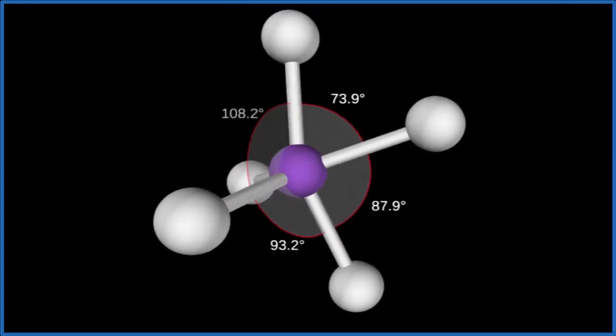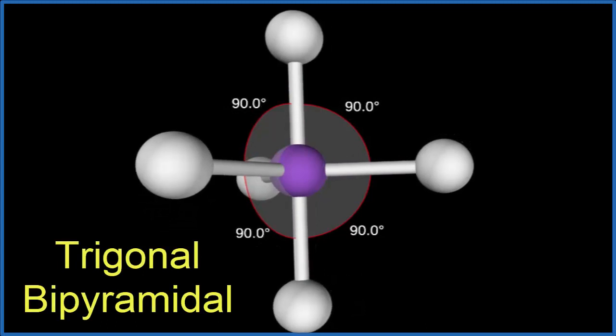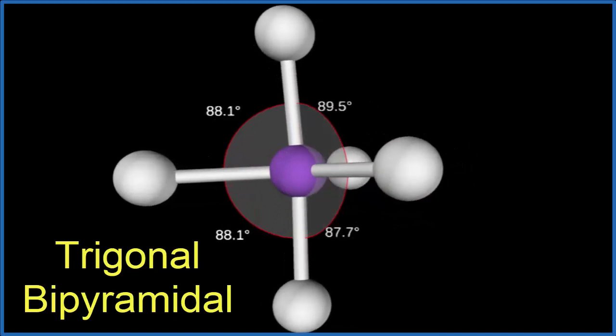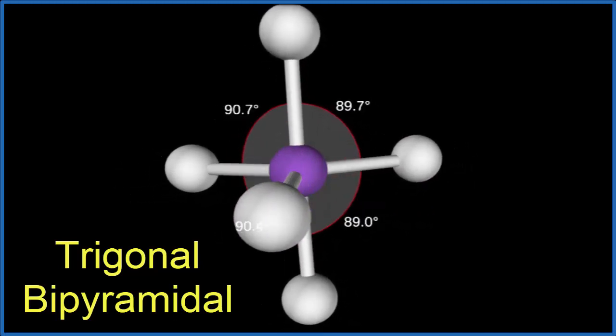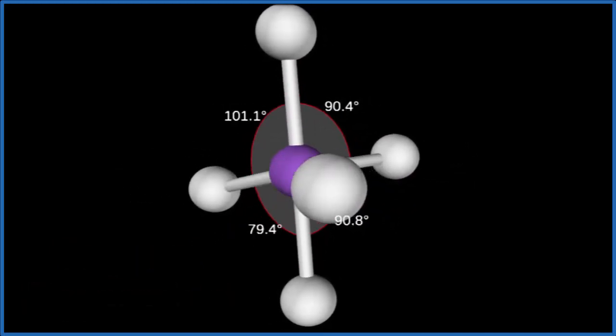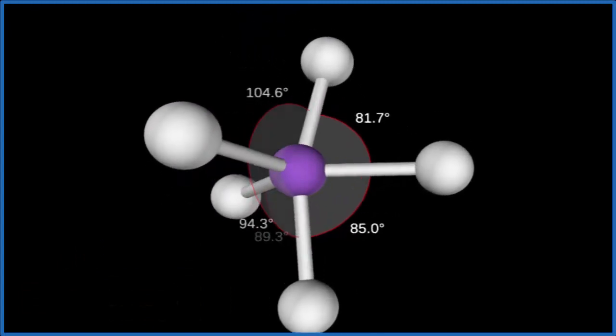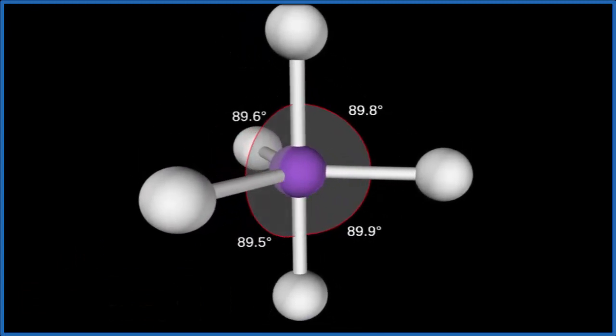We end up with what's called trigonal bipyramidal molecular geometry. So you can see the bond angles there, 90 degrees. Here at the equator, the bond angles are 120 degrees. So we have our trigonal bipyramidal molecular geometry.